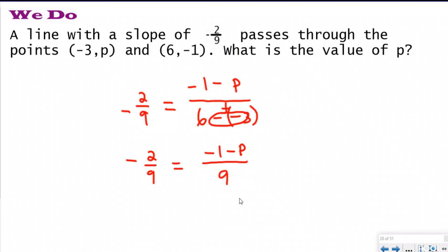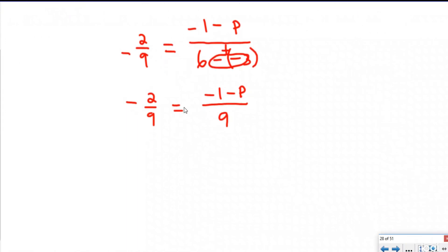And because you've done this before, you know you can cross multiply here, and they will be equal to each other. So I have 9 times negative 2, so that's going to be negative 18, equals—and then I have over here, really what I'm doing is I'm doing 9 times negative 1 minus p. And so I need to distribute that out, so that's going to be negative 9 minus 9p.